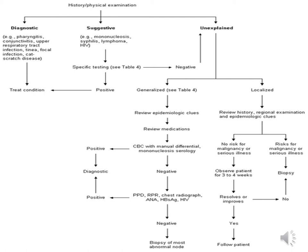If the cause is unknown by history and physical examination, we follow two lines based on whether it is generalized or localized. For generalized lymphadenopathy, review epidemiological clues and medications, take a CBC; if diagnostic, treat the cause, otherwise observe. For localized lymphadenopathy, if there is strong risk of malignancy or serious illness go for biopsy; if no such risk, observe for three to four weeks. If no improvement or enlargement occurs, proceed to biopsy or other investigations.